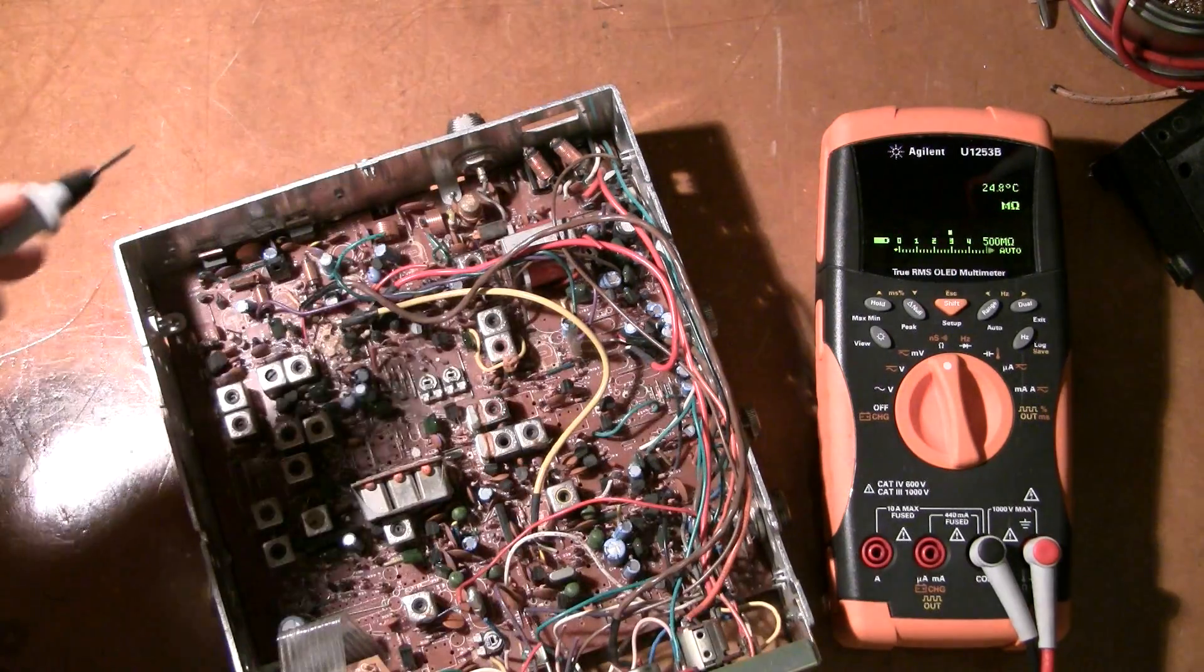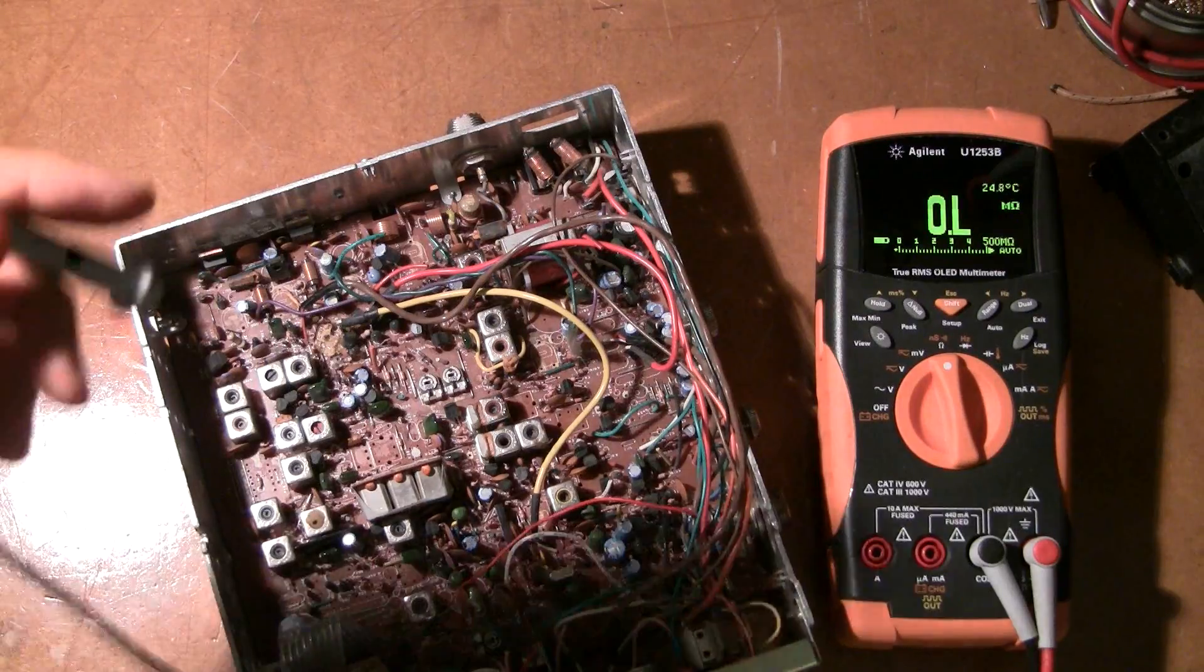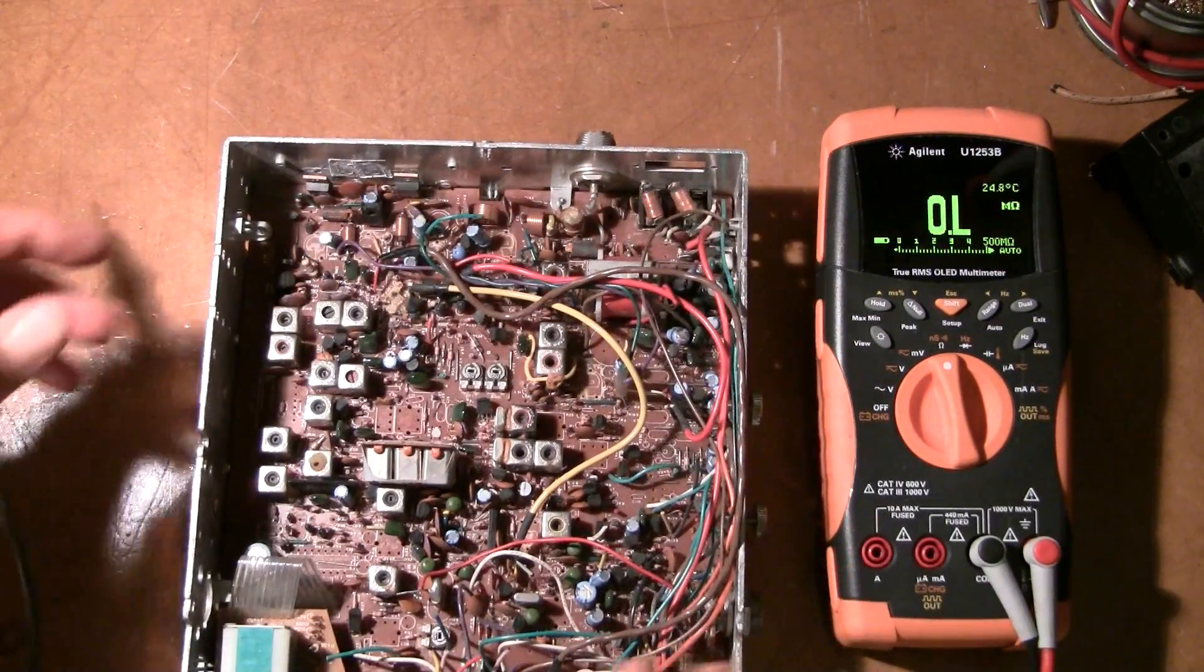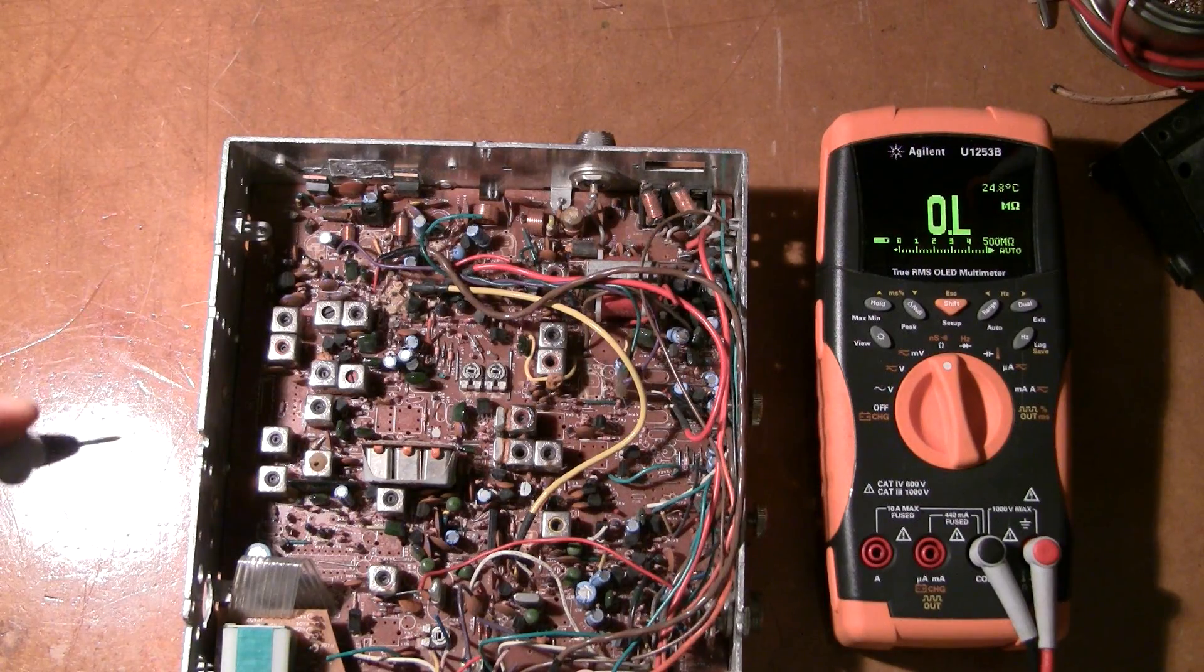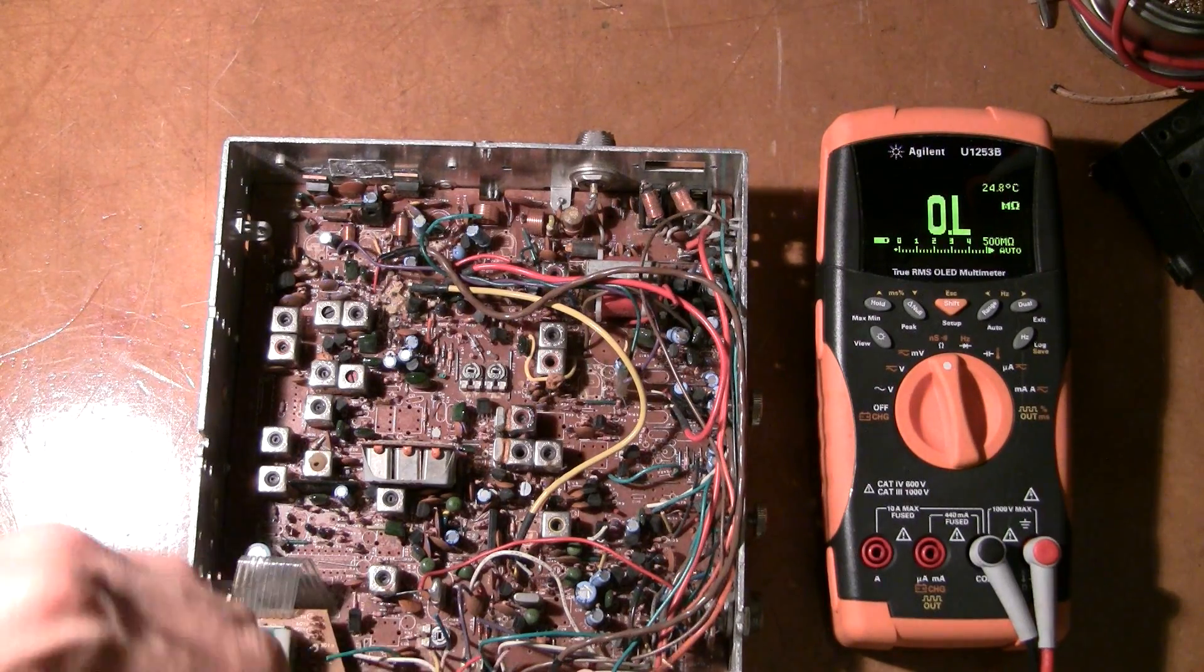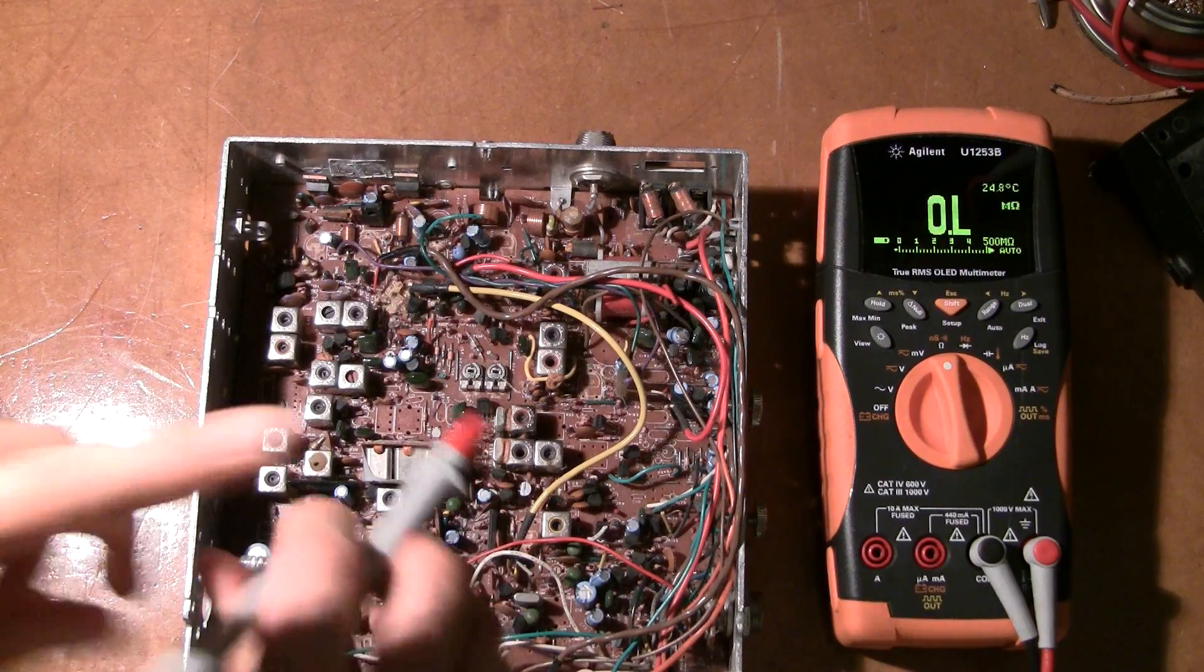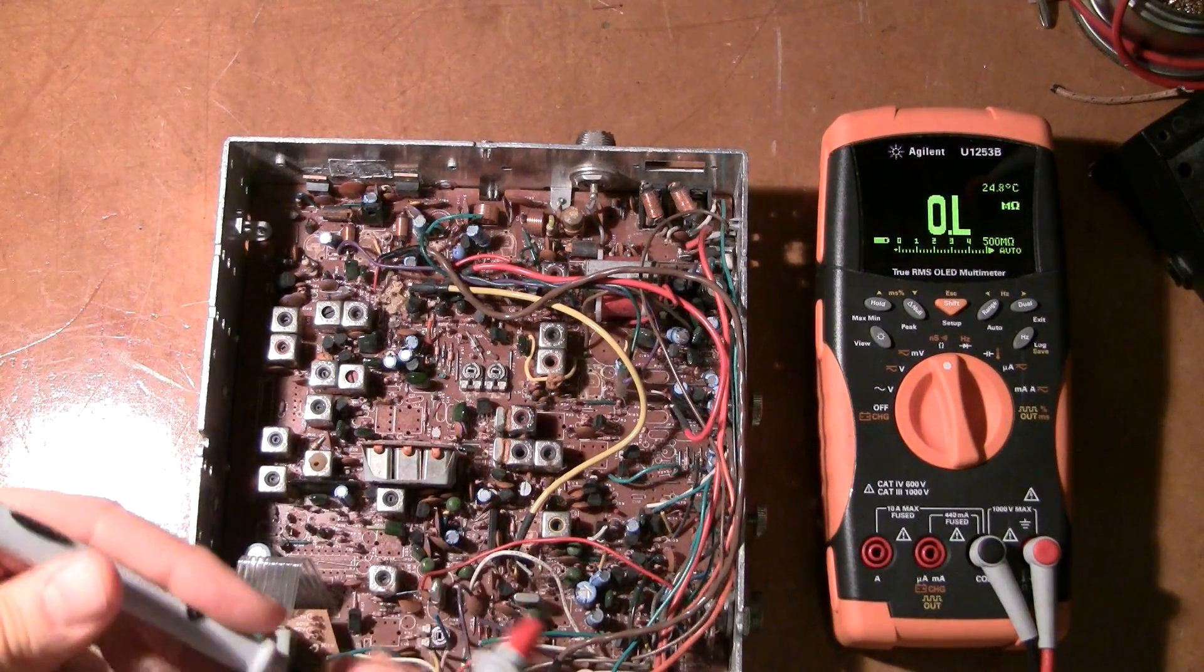So if you've got a FET driving something and that glue is touching the gate lead on a FET and it's adjacent piece is a high voltage part, that's going to turn that FET on or off or it's going to do all sorts of bad things.